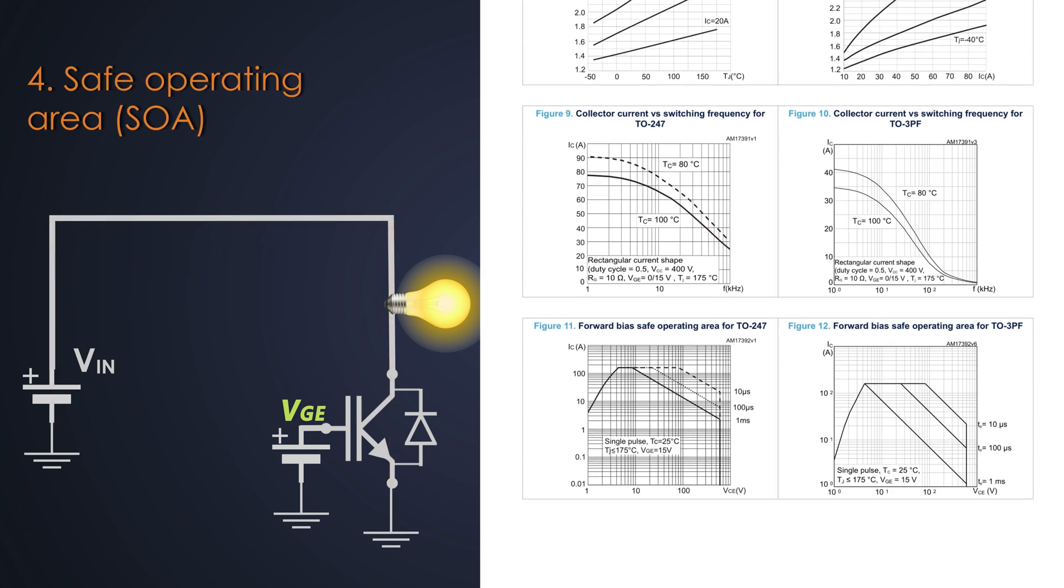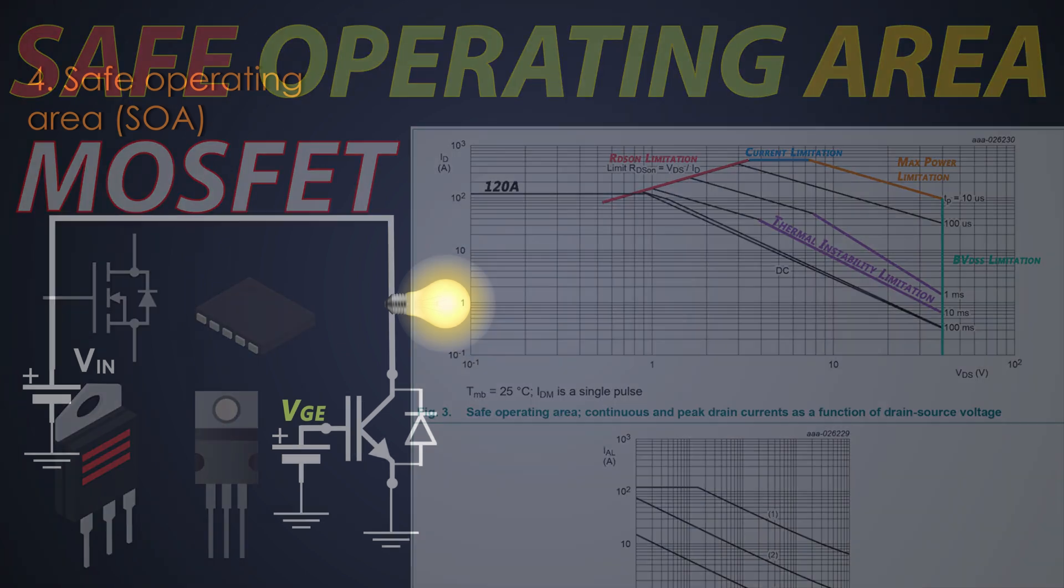The next parameter is the safe operating area. This is the graph which gives complete information about the IGBT's capacity. It is one of the most important parameters and usually many design engineers forget about that part. I have already explained the safe operating area of the MOSFET completely in this video. This parameter is similar for both MOSFET and IGBT.